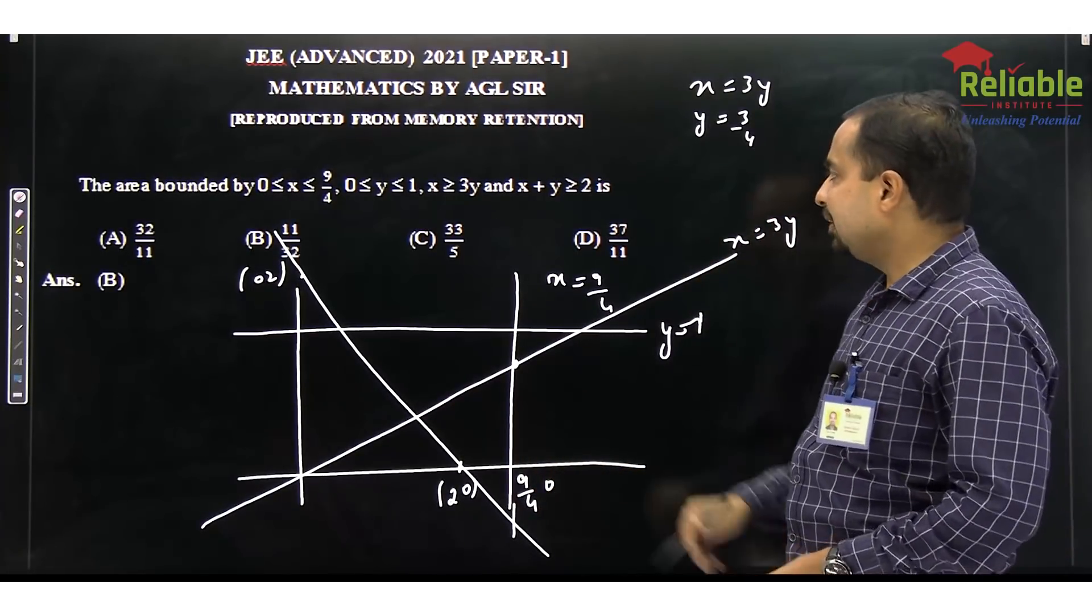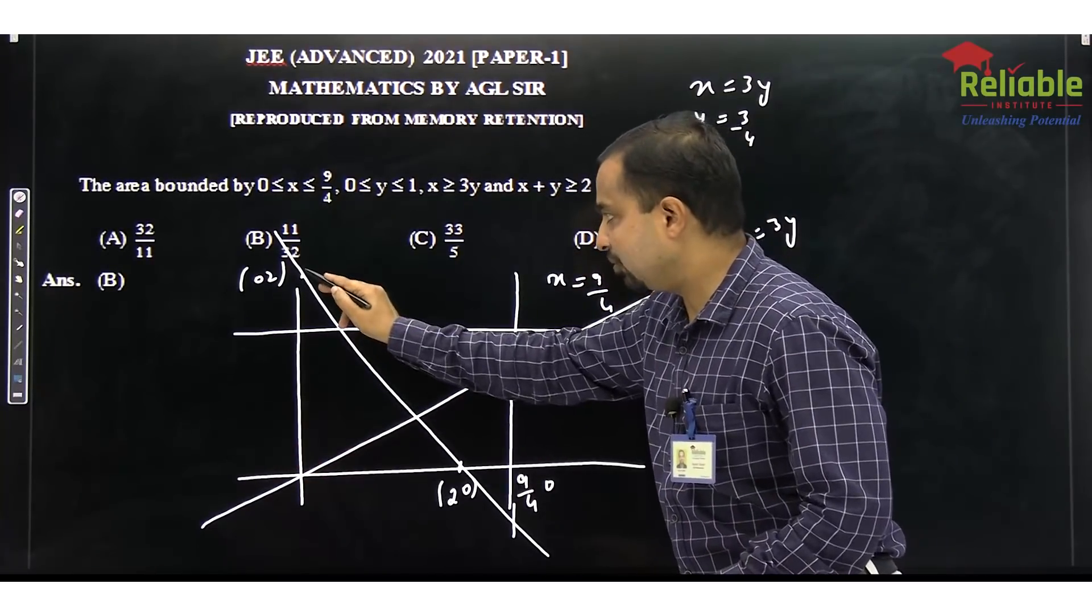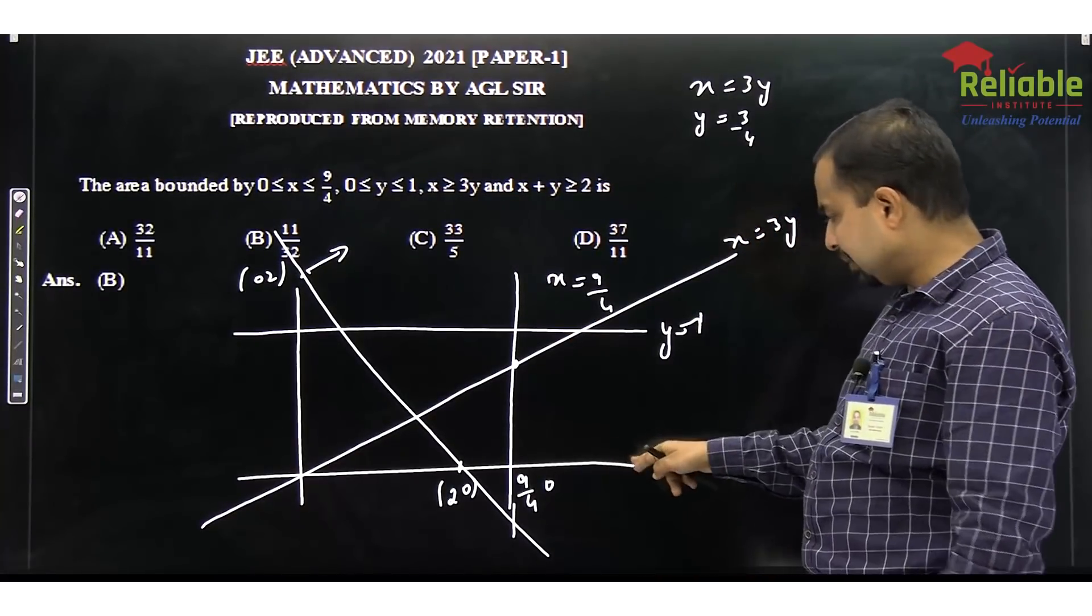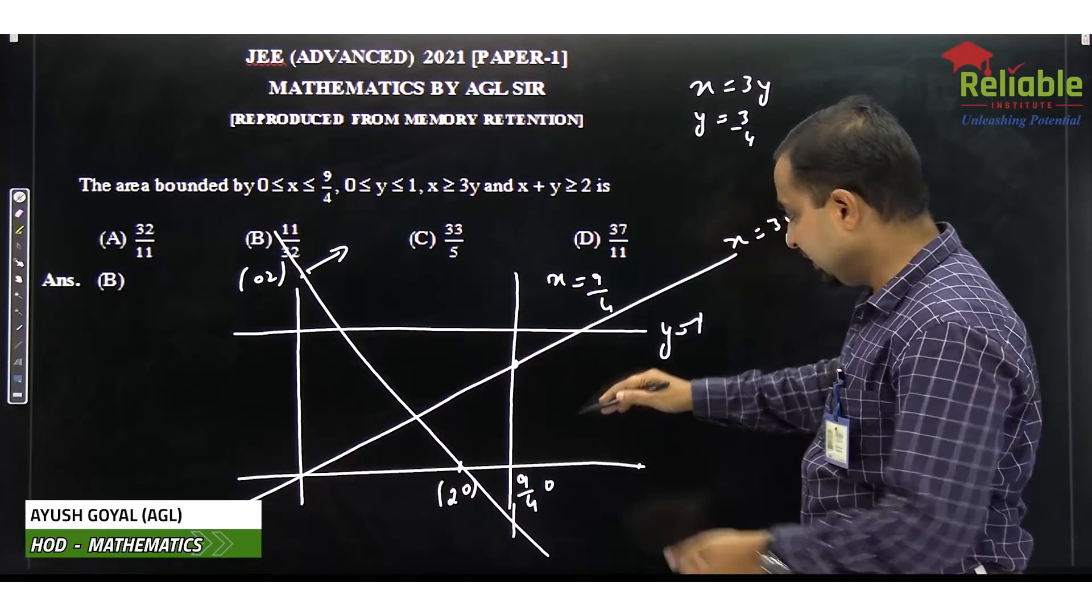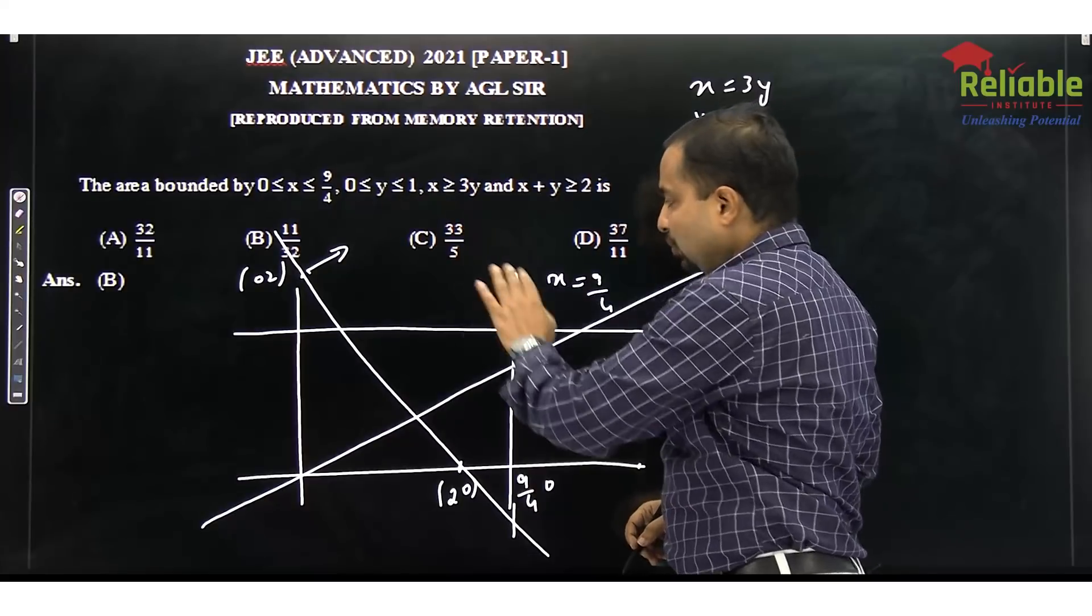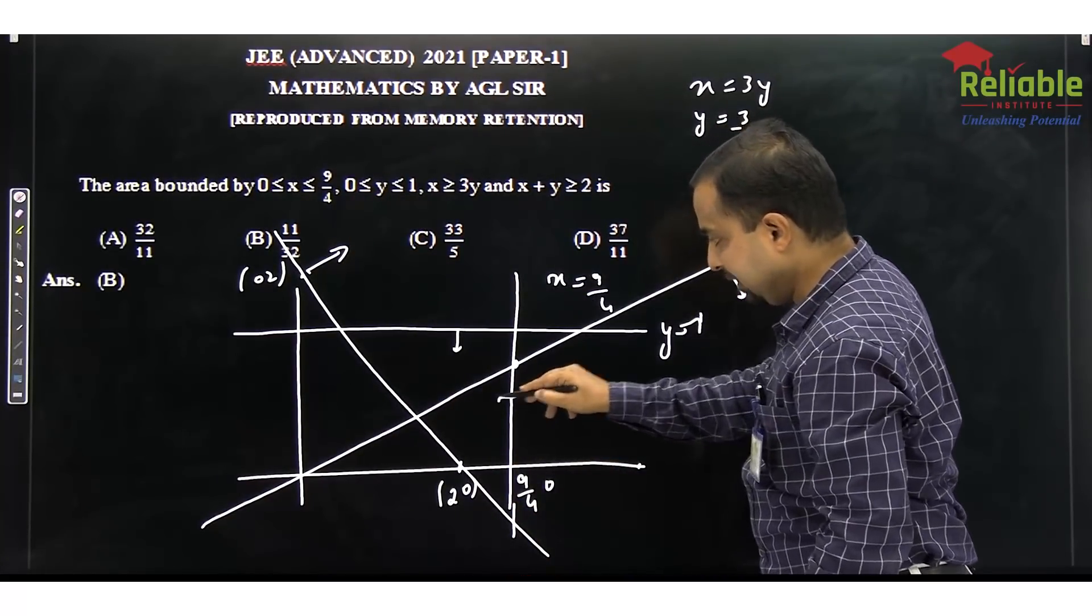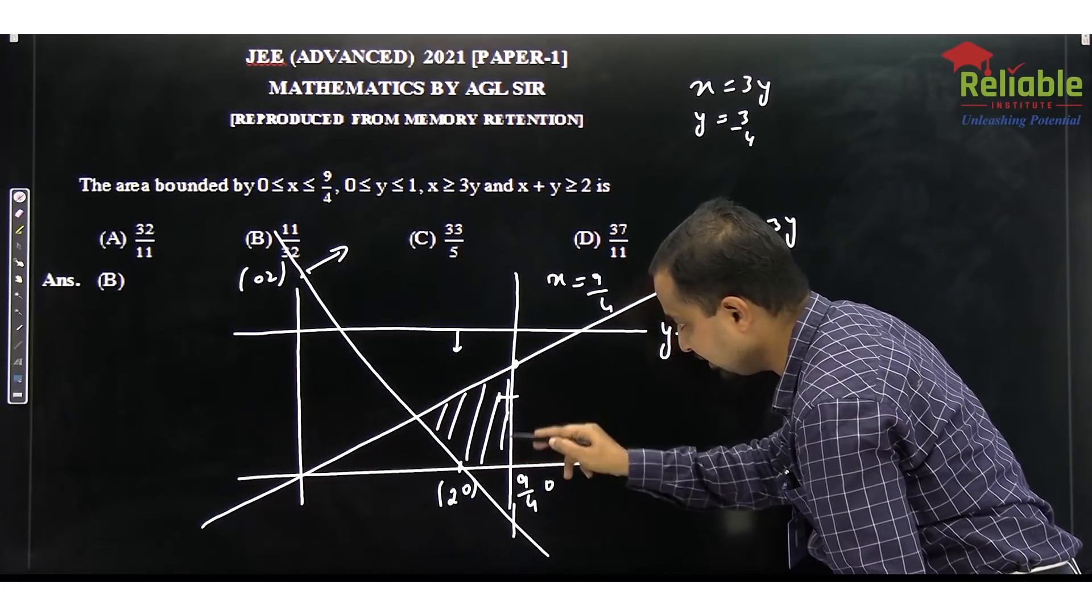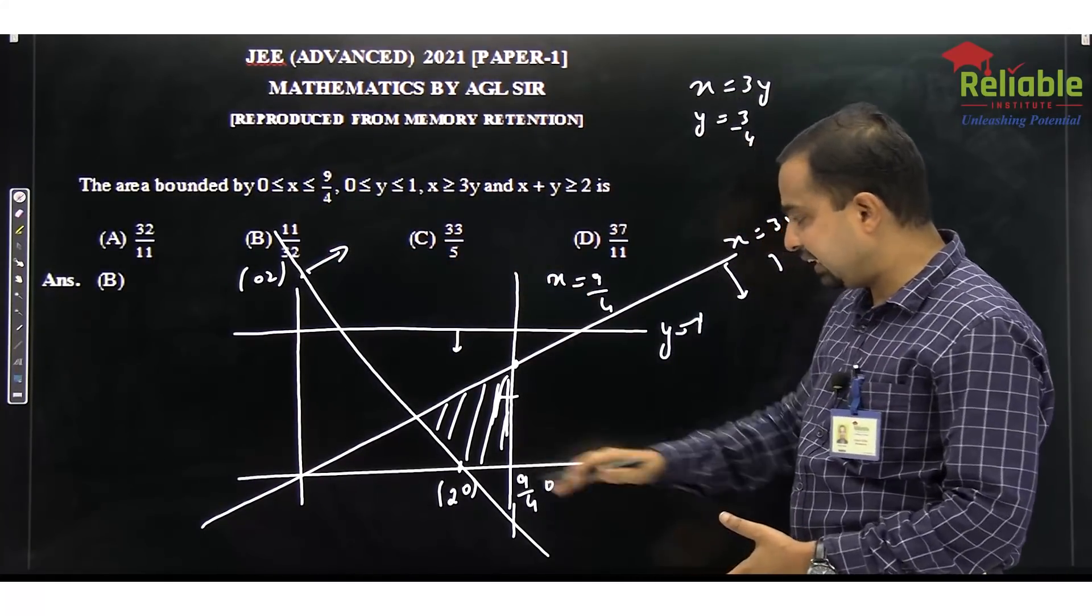Now, let's talk about inequalities. If we put the origin in this inequality, it won't satisfy. So this is not the origin side, it is the upper point. Correct? x is greater than 3y. Take some point: 10,000, 0. 10,000, 0 do satisfy. So this is the upper side. 0 to 1 is the upper point, and 9 by 4 is the upper point. So this region is this that we are looking for. With x-axis, we need bounded. Yes, y is positive. So this area we need.